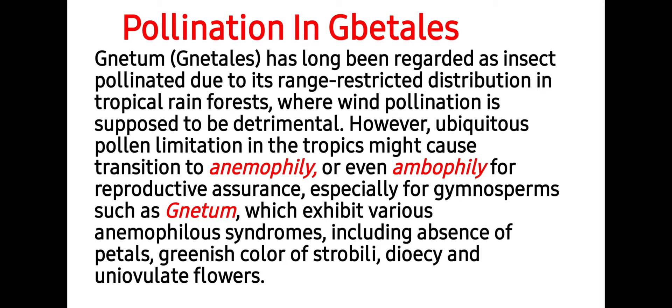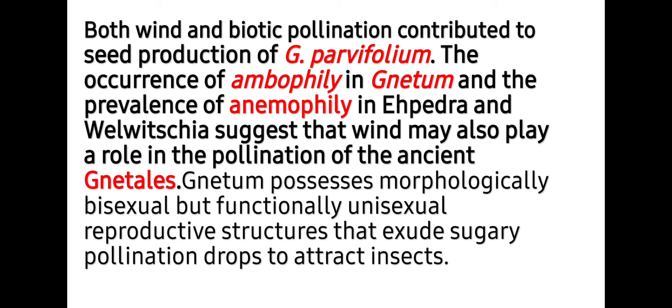This is especially for gymnosperms such as Gnetum, which exhibit various anemophily syndromes including absence of petals, greenish color of the strobilus, dichogamy, and uni-ovulate flowers. Both wind and biotic pollination contributed to seed production of Gnetum gnemon. The occurrence of ambophily in Gnetum and the prevalence of anemophily in Ephedra and Welwitschia suggests that wind may also play a role in pollination of the ancient Gnetales. Gnetum possesses morphologically bisexual but functionally unisexual reproductive structures.